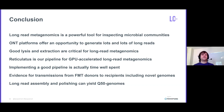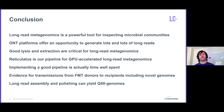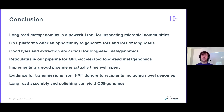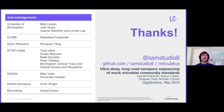To wrap up: long-read metagenomics is a powerful tool for inspecting microbial communities. The ONT platforms offer an opportunity to generate lots of long reads, but good lysis and extraction is critical to do proper long-read metagenomics. We have a new pipeline called Reticulatus for GPU-accelerated long-read metagenomics, and implementing such a pipeline is actually time well spent. We've shown evidence for transmissions from FMT donors to recipients, and they include novel genomes — so it's really cool. Finally, long-read assembly and polishing can yield Q50 genomes. Thank you very much for listening to my very first virtual talk.